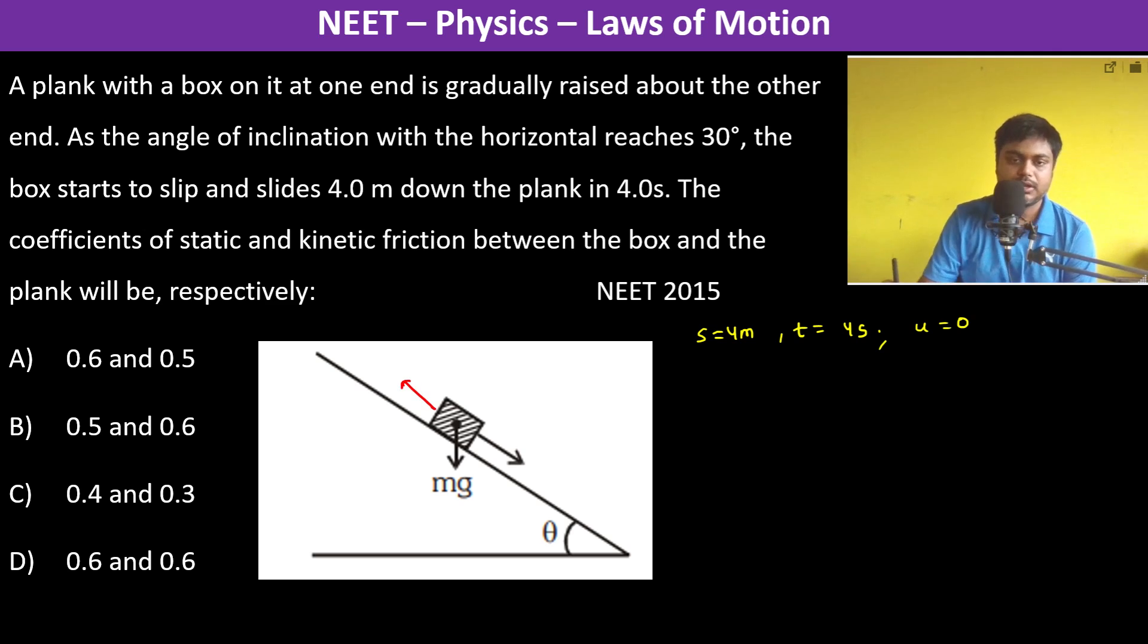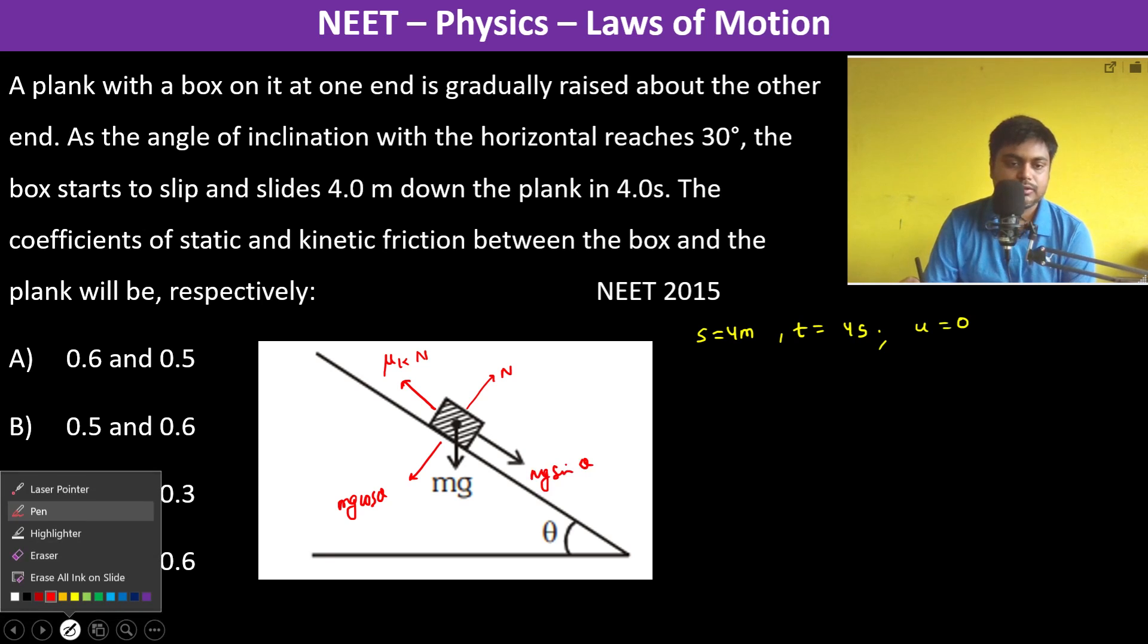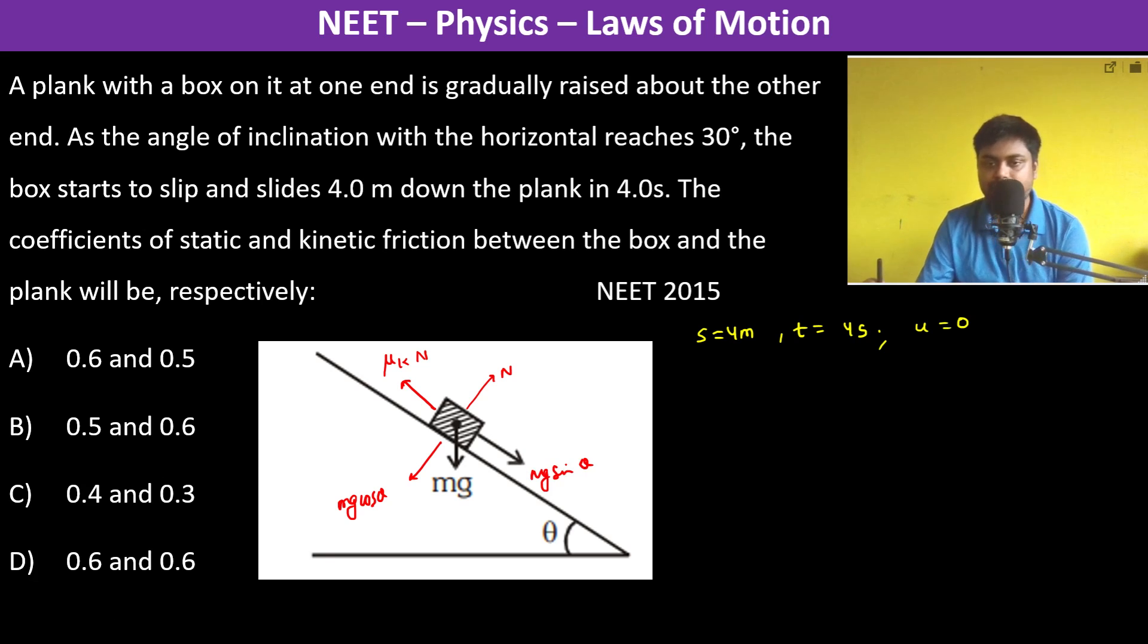So therefore in this direction it is going to be μk into N, and N was, so this is mg cos theta and this is mg sin theta. So therefore we have the acceleration as mg sin theta minus μk times mg cos theta divided by m. Now we can find acceleration from this.